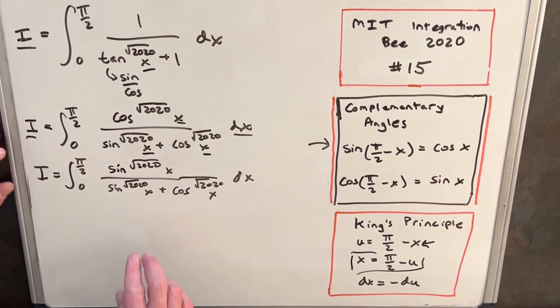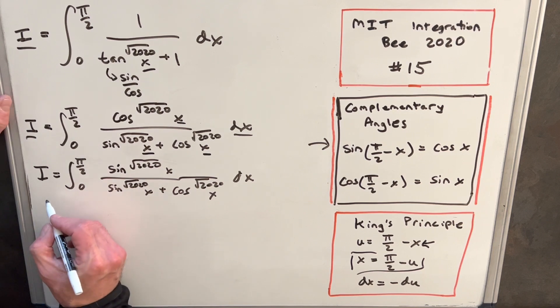So now I've rewritten this and I switched the order of the sine and cosine. It doesn't matter, it's addition, just to make these look more similar. And so let's now add these together and see what we get.